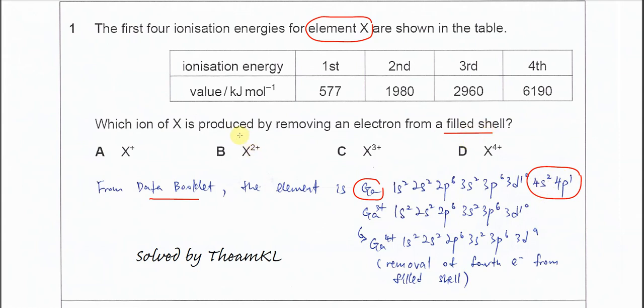the electron is removed from the filled shell. That's why the ion of X produced by removing an electron from a filled shell means when the fourth electron is removed to form X⁴⁺. That's why the answer is D. Thank you.